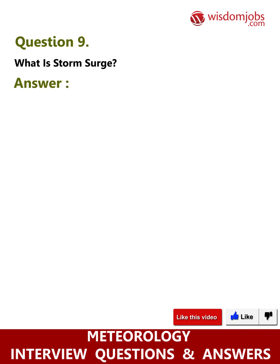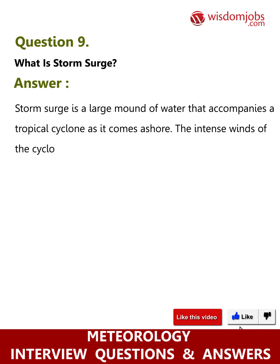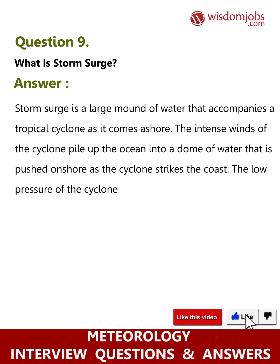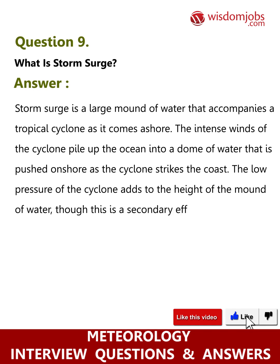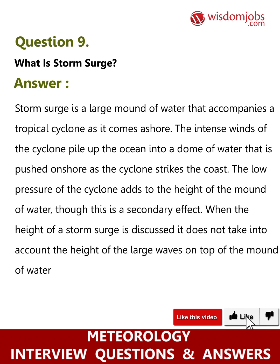Question 9: What is storm surge? Storm surge is a large mound of water that accompanies a tropical cyclone as it comes ashore. The intense winds of the cyclone pile up the ocean into a dome of water that is pushed onshore as the cyclone strikes the coast. The low pressure of the cyclone adds to the height of the mound of water, though this is a secondary effect. When the height of a storm surge is discussed, it does not take into account the height of the large waves on top of the mound of water.